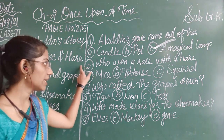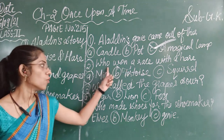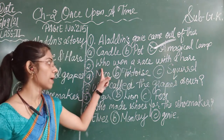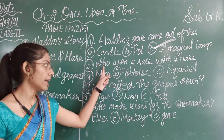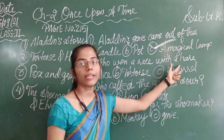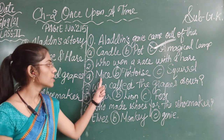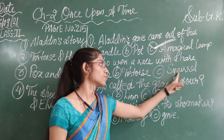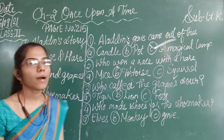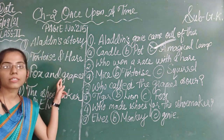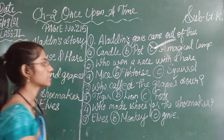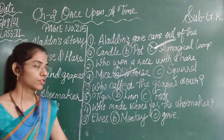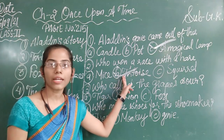Related to the tortoise and hare story, a question is given: 'Who won a race with a hare?' The three options are: first, mice; second, tortoise; and third, squirrels. Based on the story, the correct answer is the tortoise. So you have to go with the second option — tortoise.